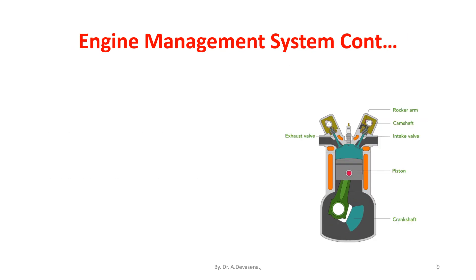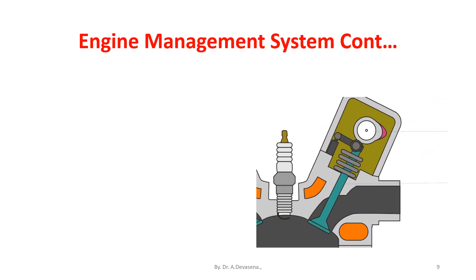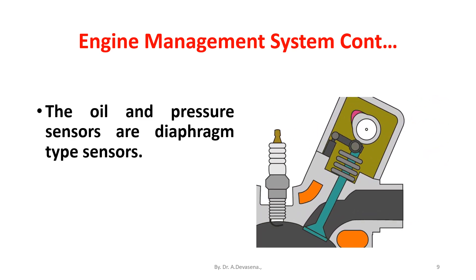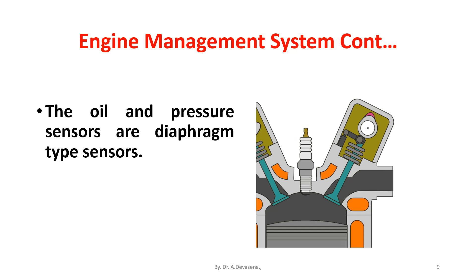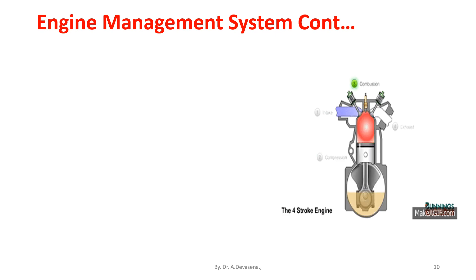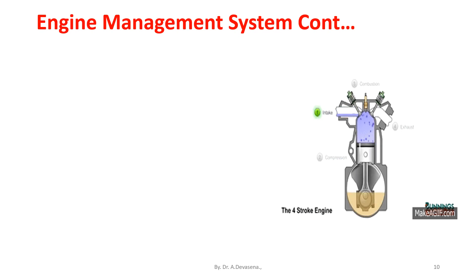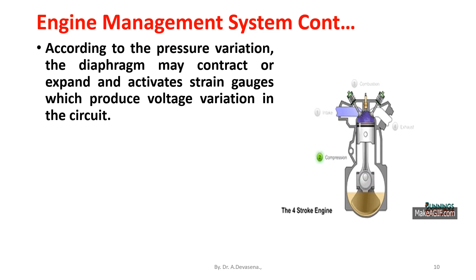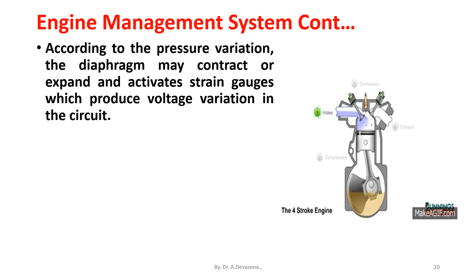The oil and pressure sensors are diaphragm type sensors. According to the pressure variation, the diaphragm may contract or expand and activate strain gauges, which produces voltage variation in the circuit.